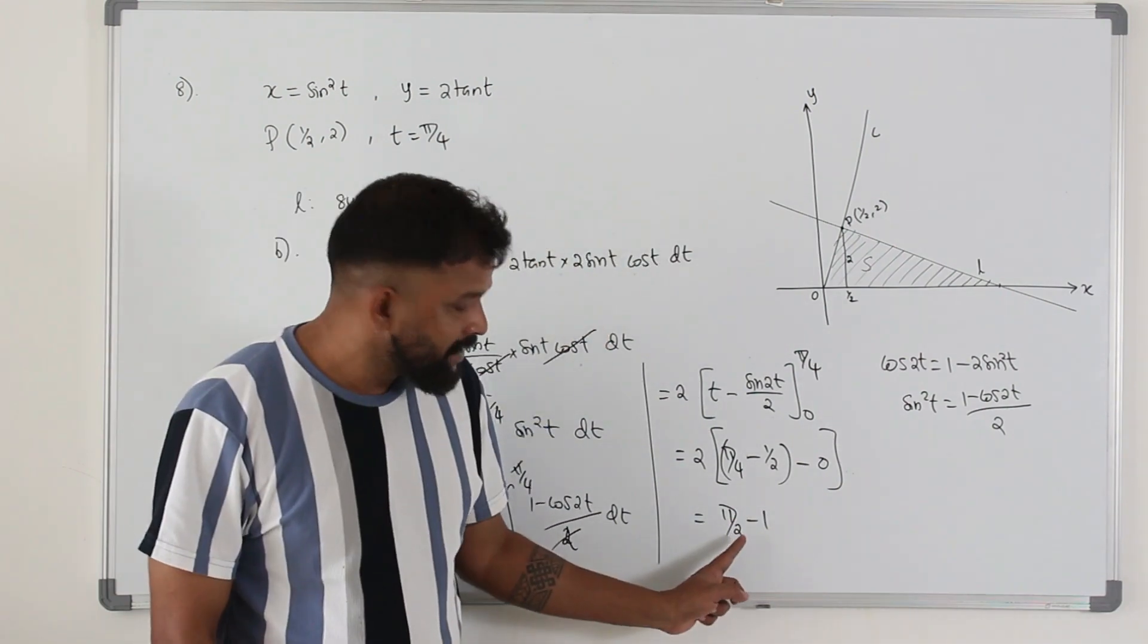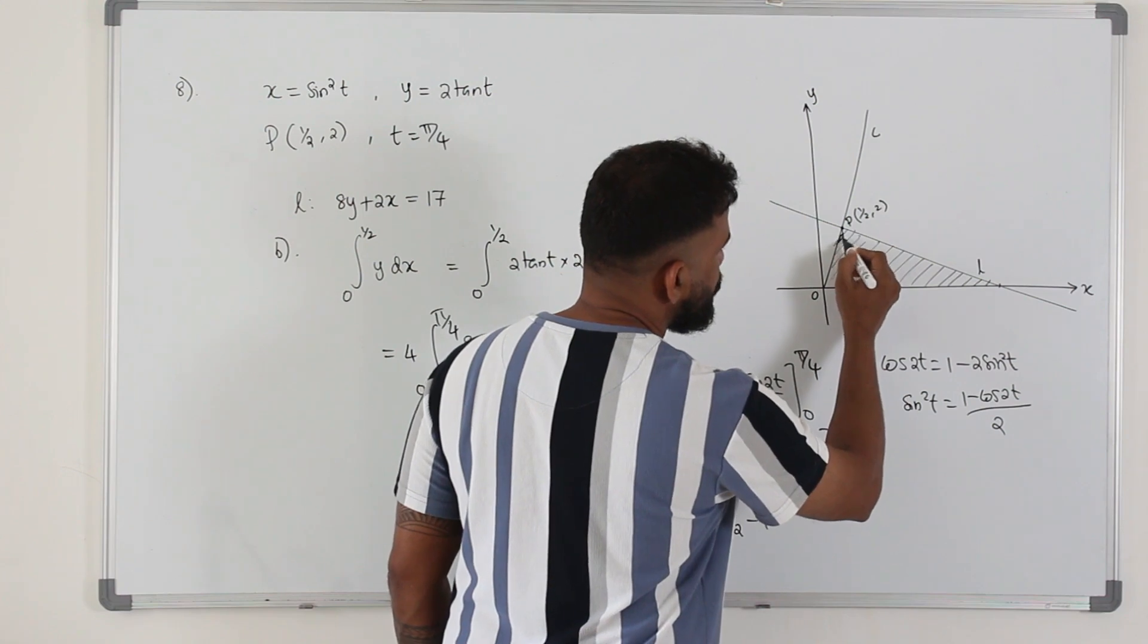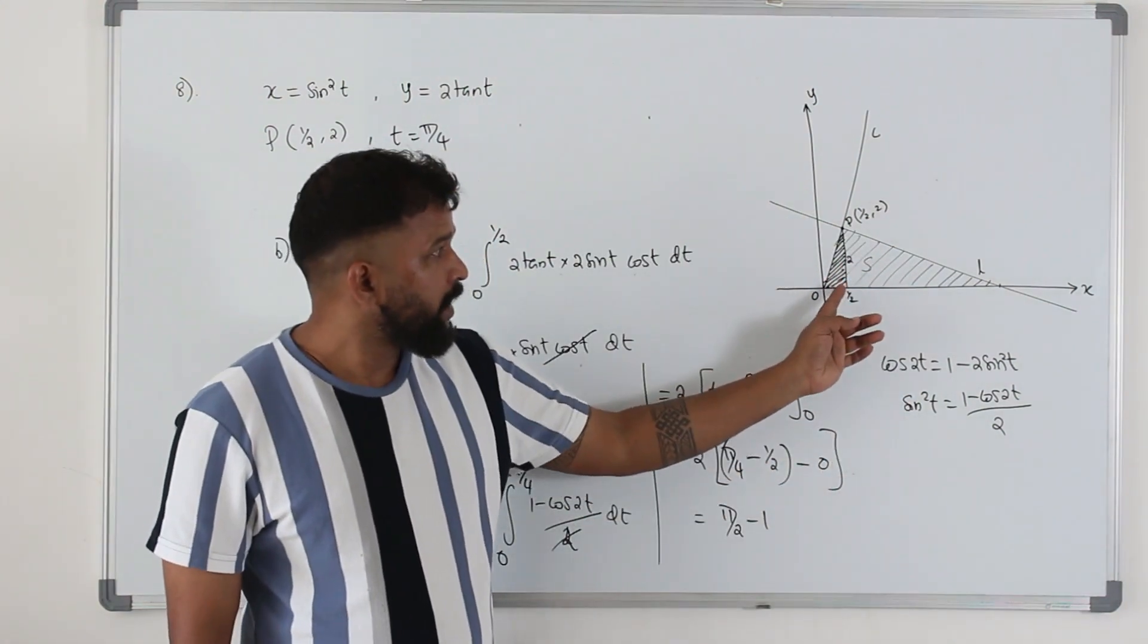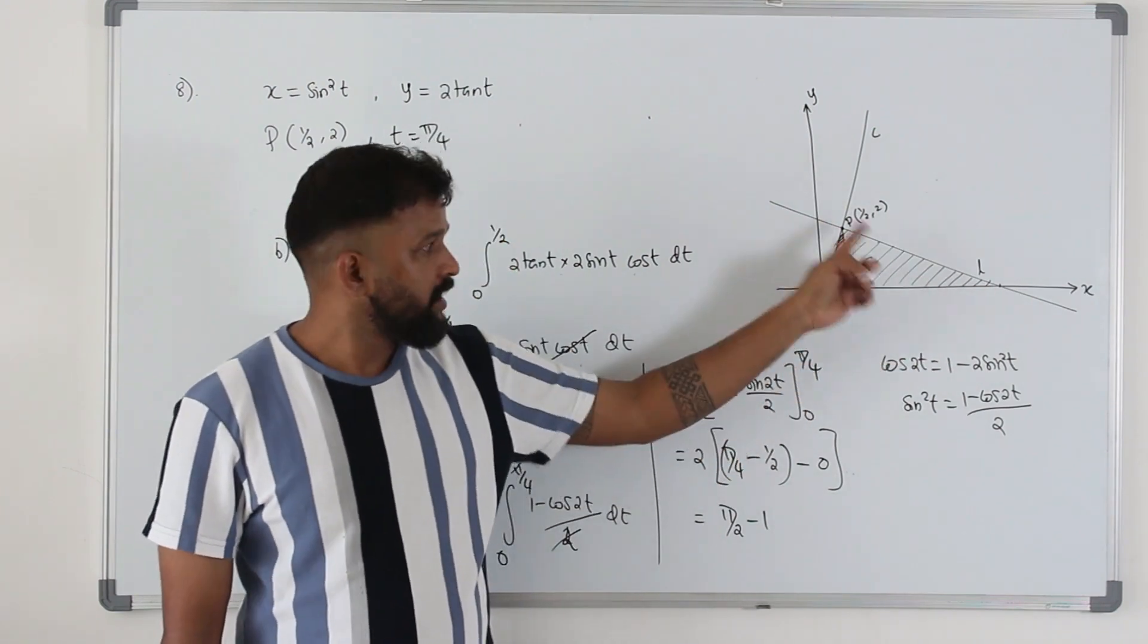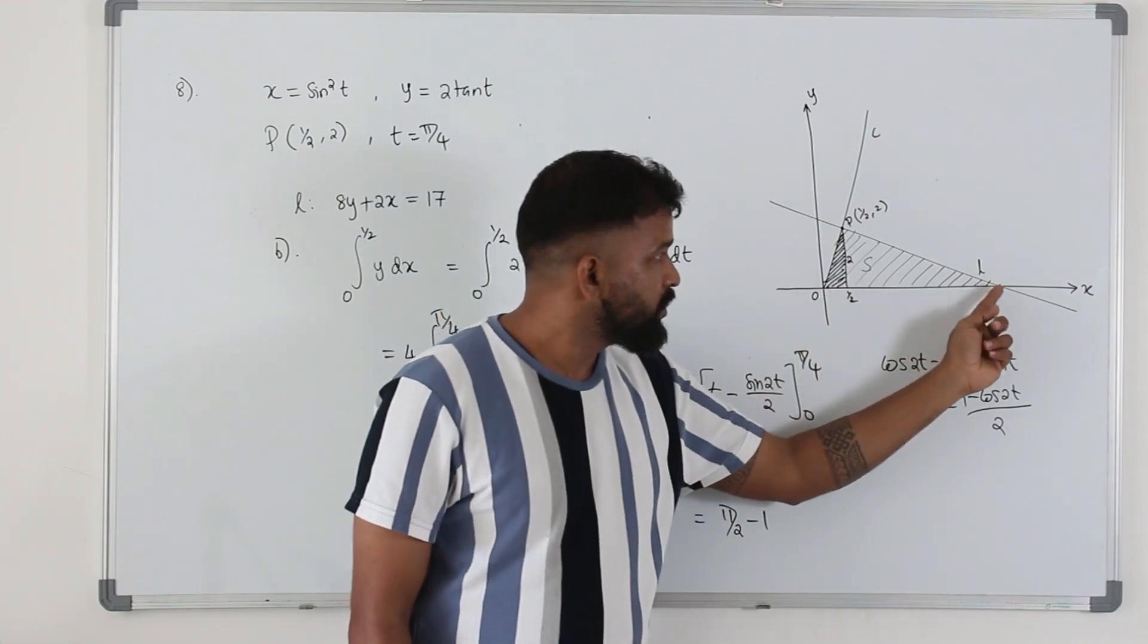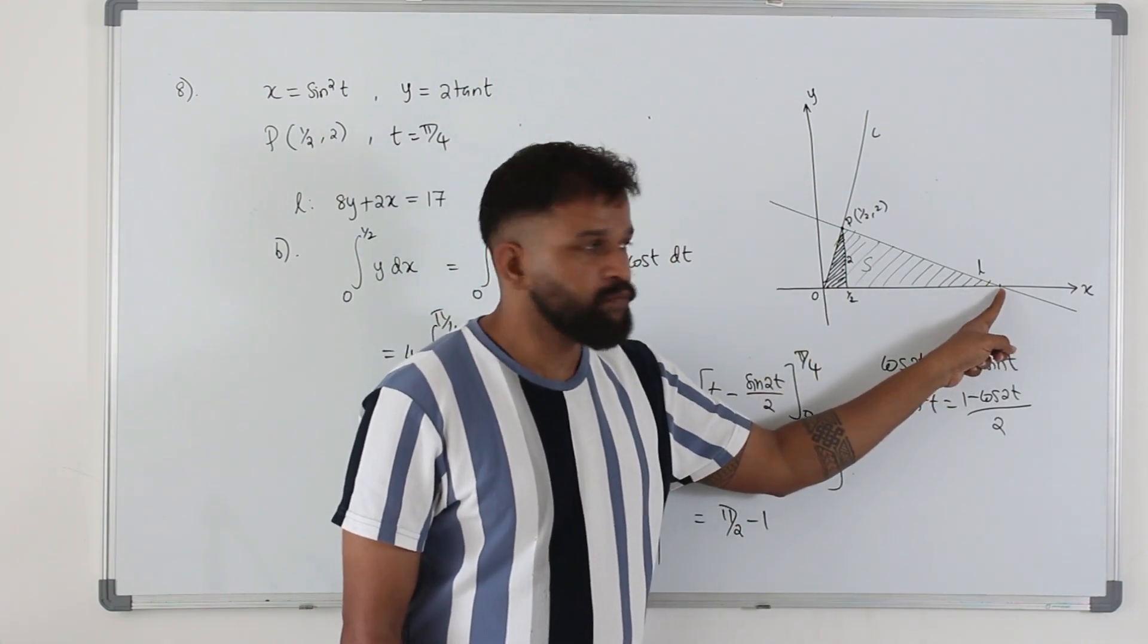So this is basically this little area, this little area. Now we are going to find the area of this little triangle. We have the height 2. We need the base. So we need the x coordinate of this point.